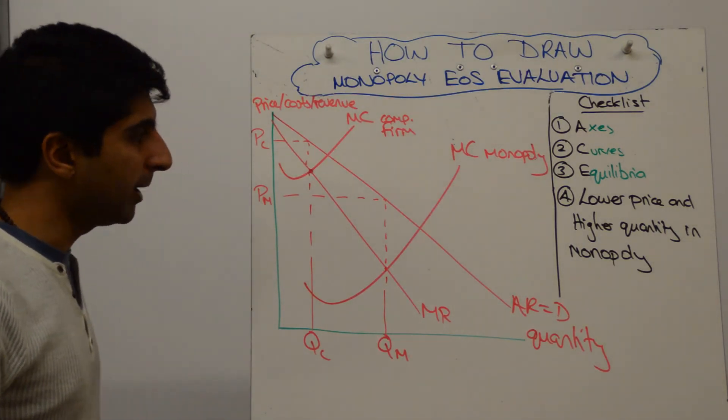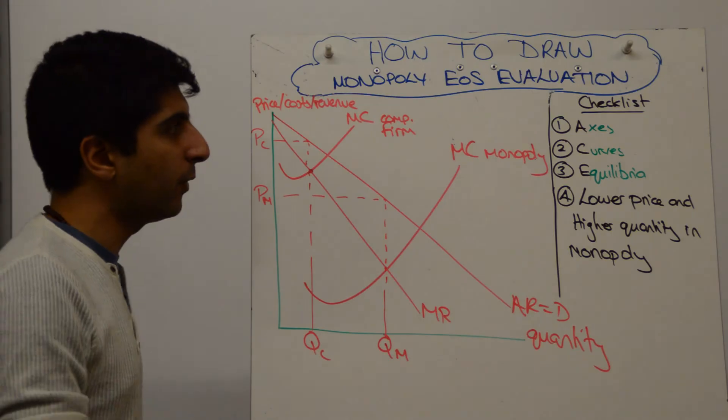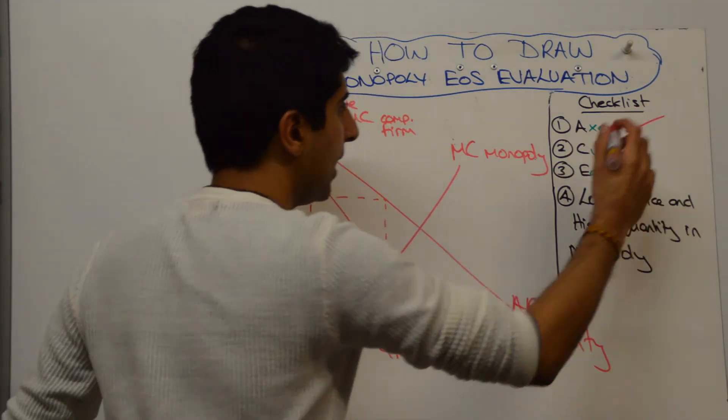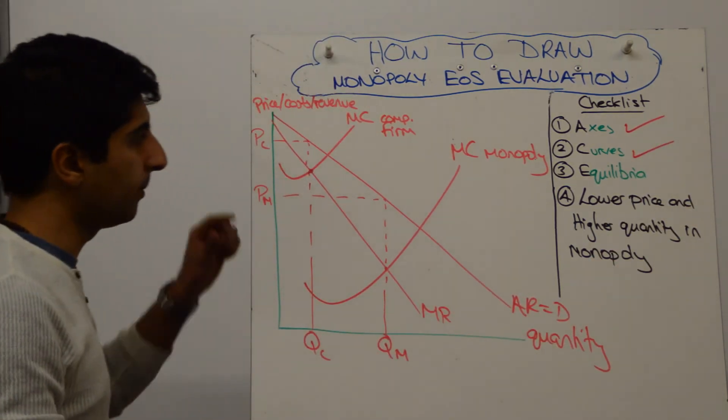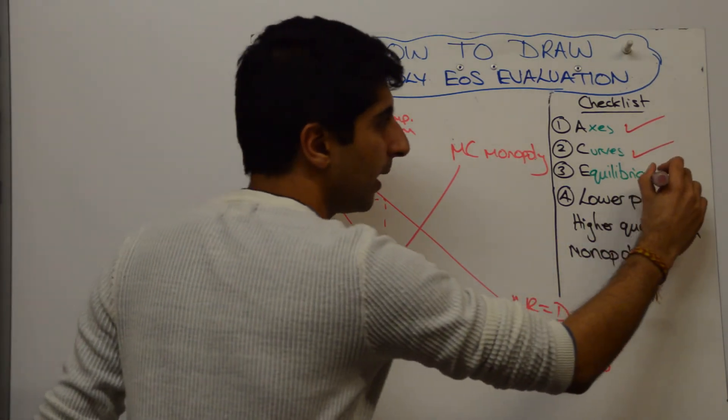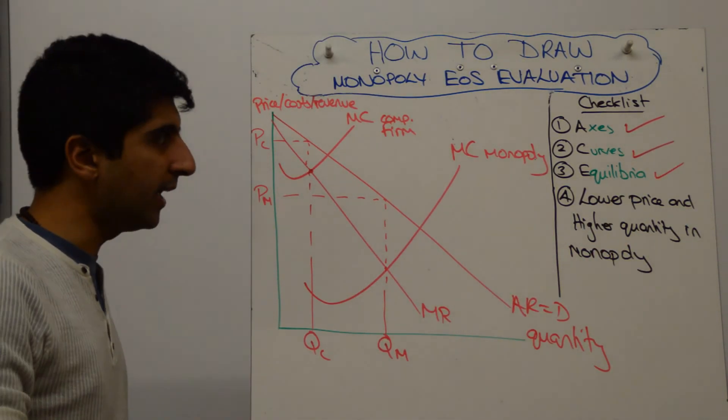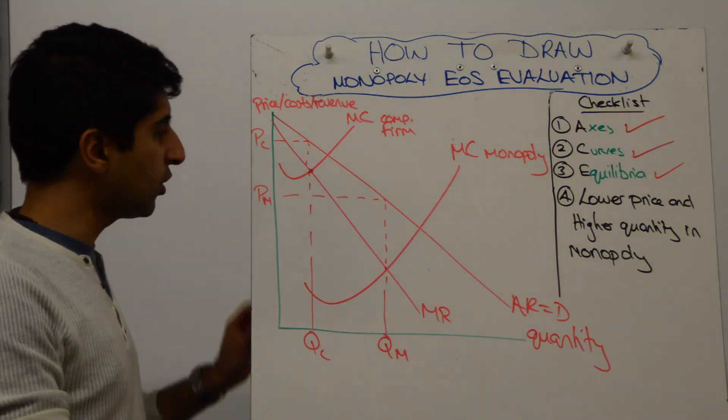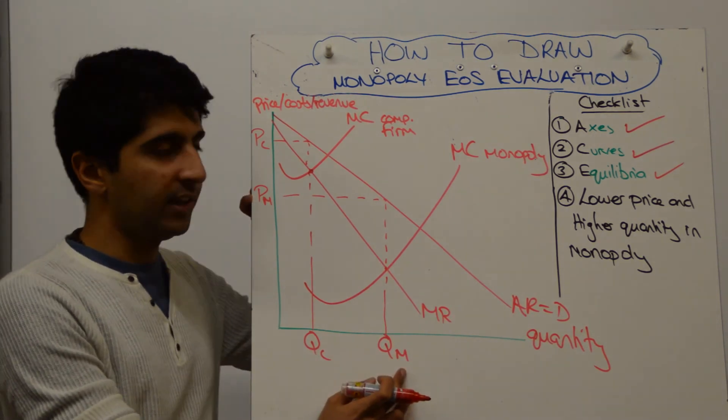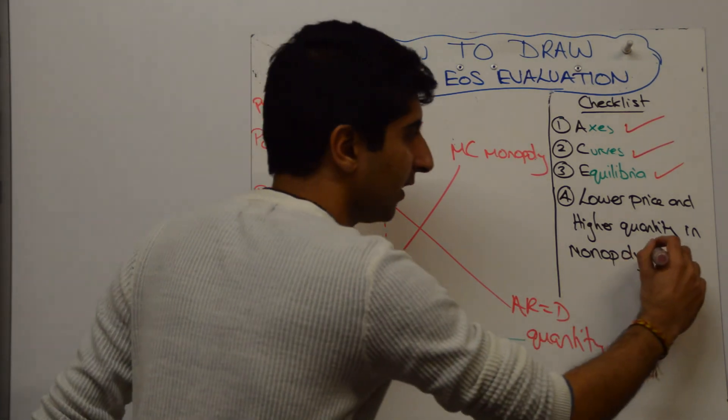So now, let's go to our checklist and make sure that the diagram is finished. Have we labeled our axes? Yes. Have we labeled our curves? Yes, we have, beautifully. Have we labeled our equilibrium? Yes, we have. Okay, so that means we've aced our diagram, drawn an ace diagram. Well done. And have we done number four, which is the key thing? Have we shown a lower price and a higher quantity in monopoly? Yes, we have, perfectly done.